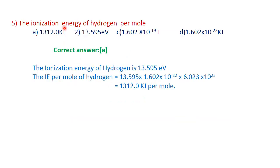Question 5: The ionization energy of hydrogen per mole. Options include: A) 1312.0 kJ, B) 13.595 electron volts, C) 1.62 × 10^-19 joules, D) 1.602 × 10^-22 kJ. The correct answer is A: 1312.0 kJ per mole. The ionization energy of the hydrogen atom is also expressed as 13.595 electron volts.